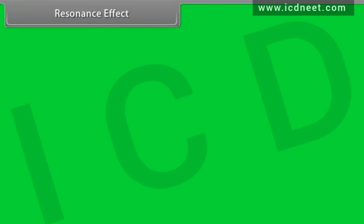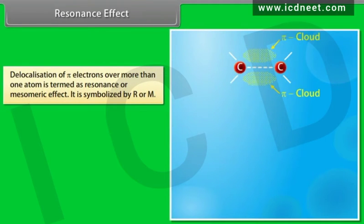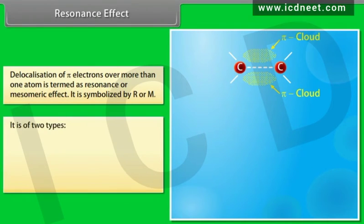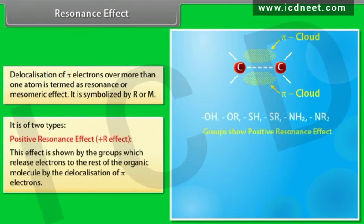Resonance effect: delocalization of pi-electrons over more than one atom is termed as resonance or mesomeric effect. It is symbolized by capital R or capital M. Positive R effect: this effect is shown by groups which release electrons to the rest of the organic molecule by delocalization of pi-electrons.